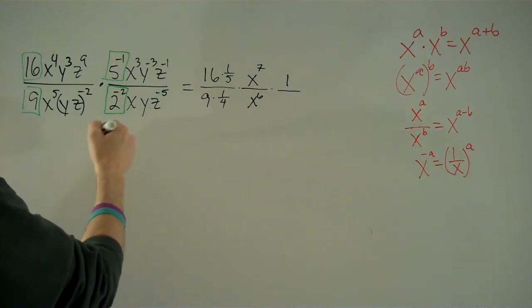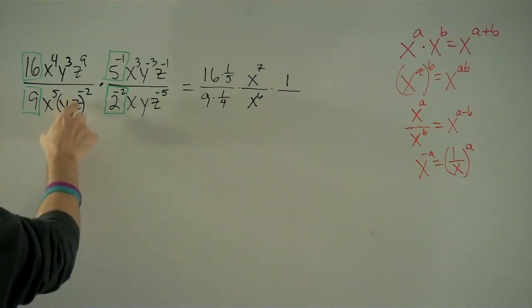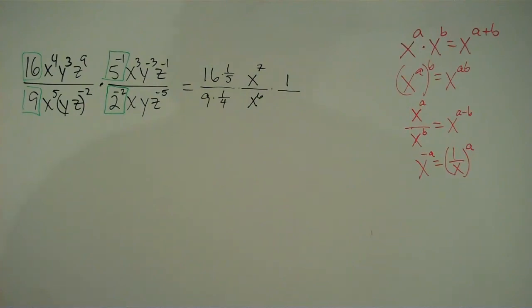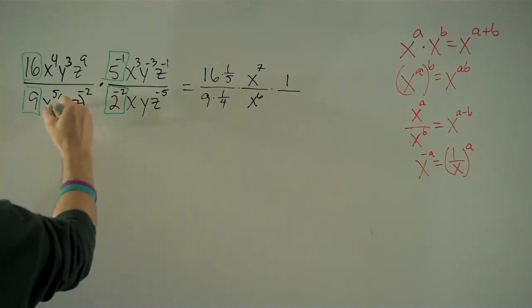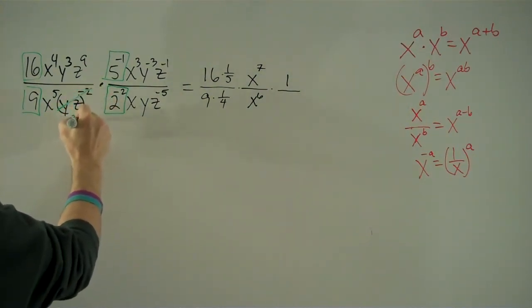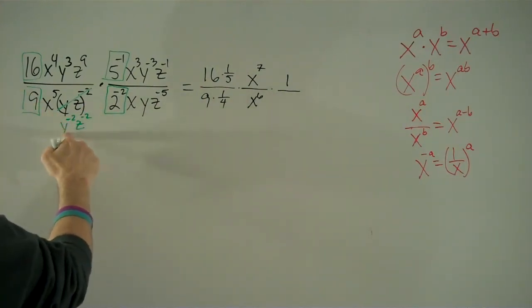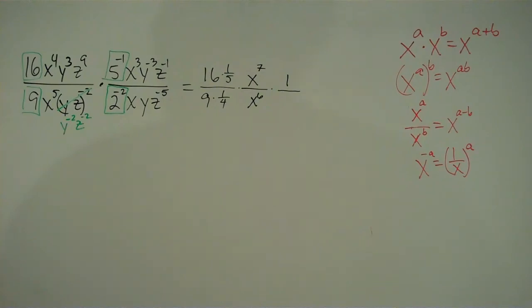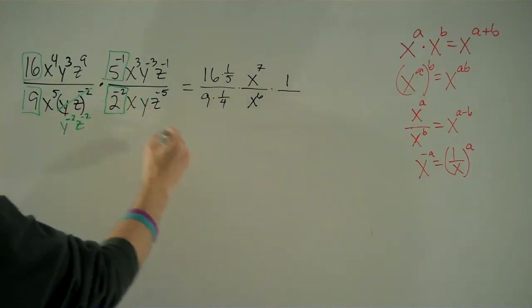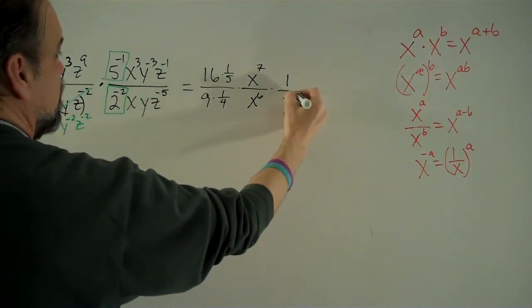And that's over, now what do we have here? We have yz to the negative 2. Well, that's just the same as saying y to the negative 2 times z to the negative 2. So this is y to the negative 2 power times y to the 1 power, that's y to the negative 2 plus 1, that is y to the negative 1.